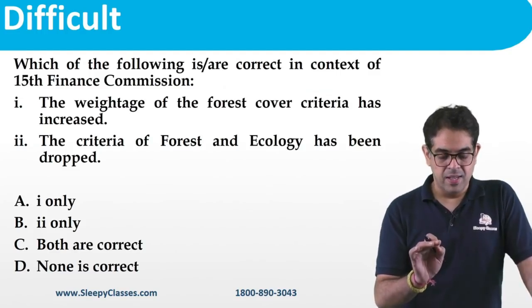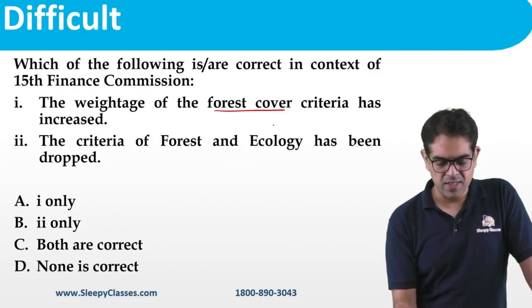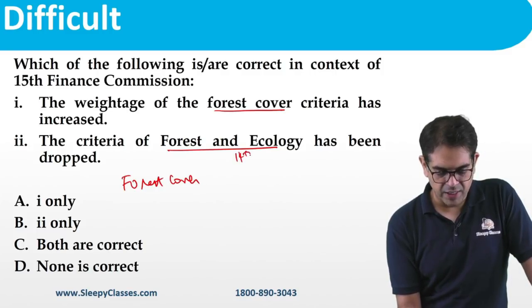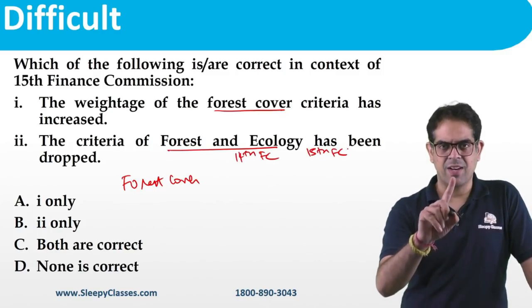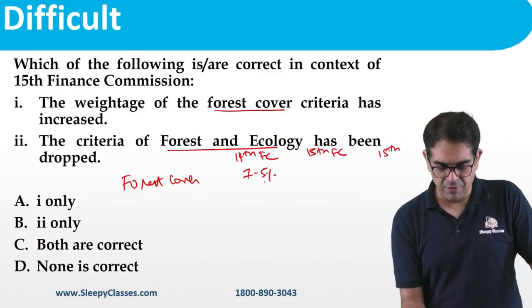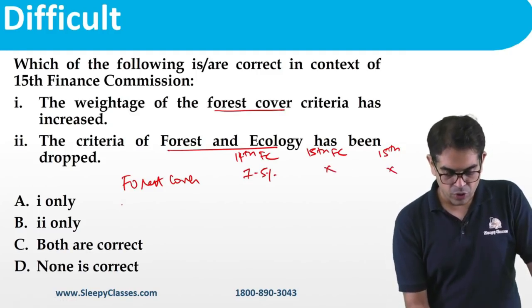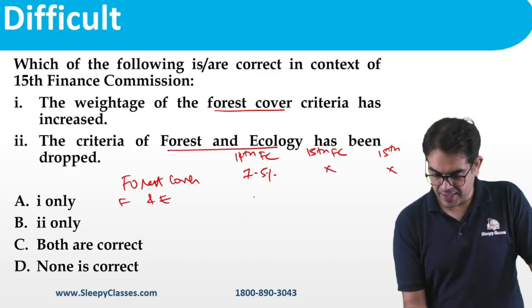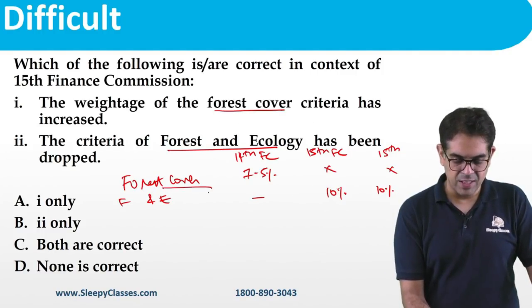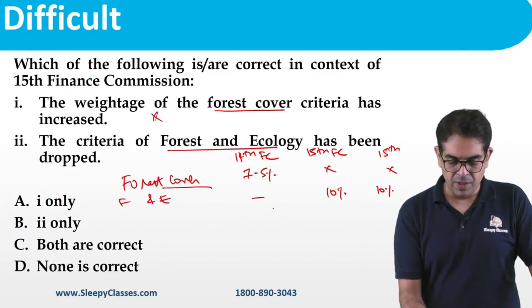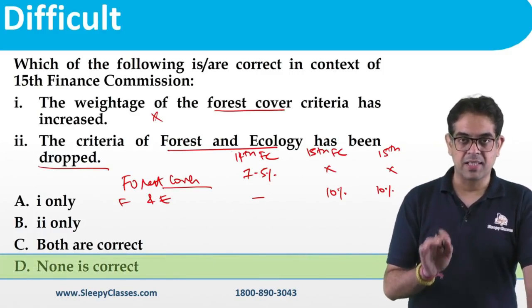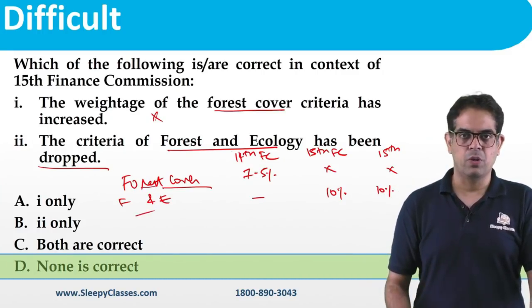Next: 15th Finance Commission. A difficult question because two things changed. In the 14th Finance Commission, forest cover had 7.5% weightage. In the 15th Finance Commission, 'forest cover' as a standalone criterion was dropped, and 'forest and ecology' was introduced with 10% weightage each. So: weightage of forest cover criteria has increased — WRONG (forest cover was removed). Criteria of forest and ecology has been dropped — WRONG (it was introduced). None of the options is correct — the answer is none of these.